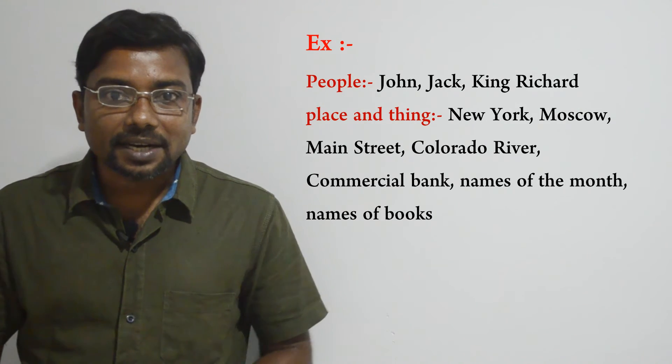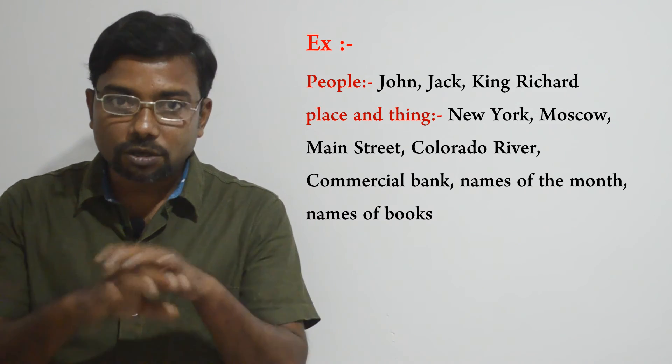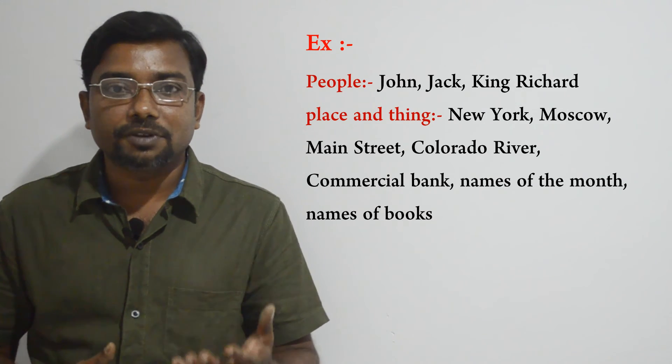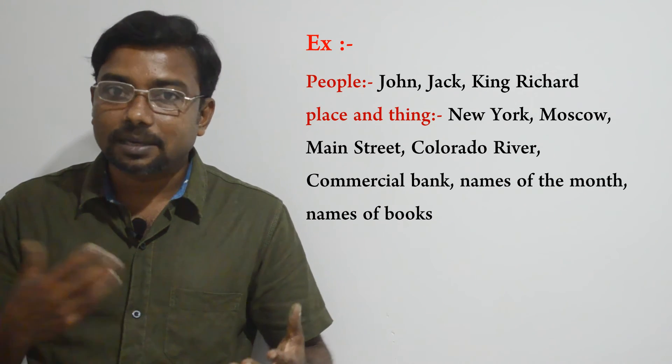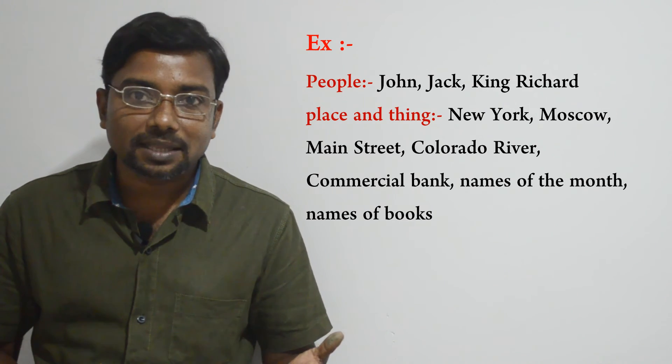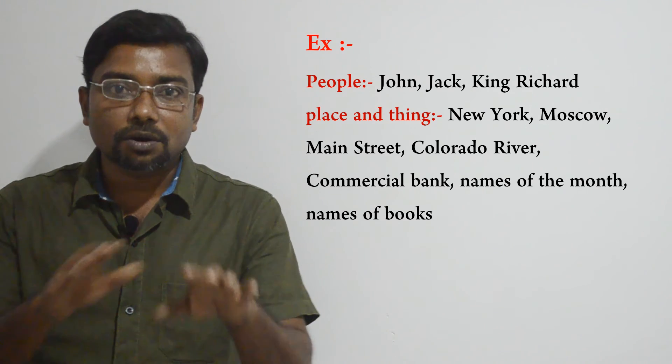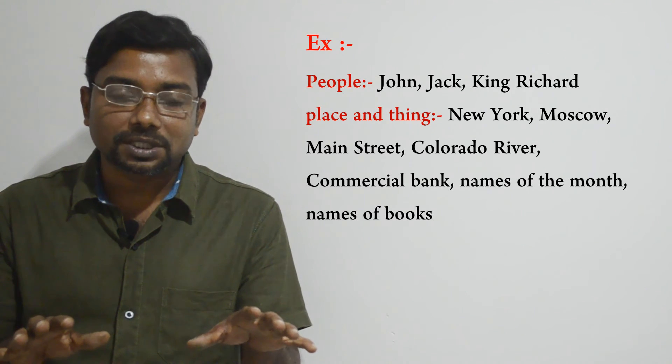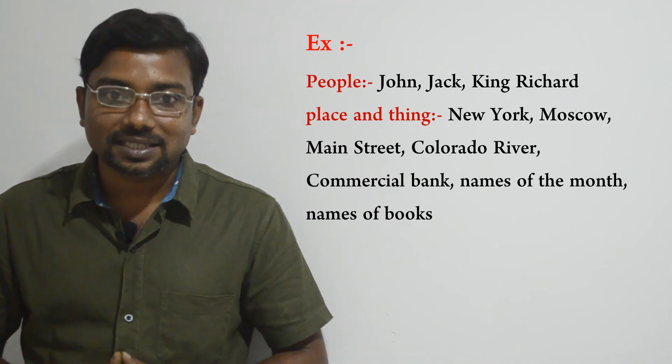Places and things we can also use specific names to identify — these are also proper nouns. For example: New York, Moscow, Main Street, Colorado River, Commercial Bank, names of months, names of years, names of books. These are proper nouns because we can identify specific things from them. Remember: common noun we use for common things and we cannot identify specific things from common noun. But proper noun we use for specific things and we can identify specific things from proper noun.